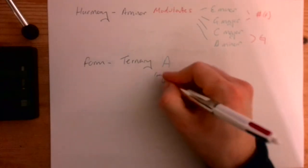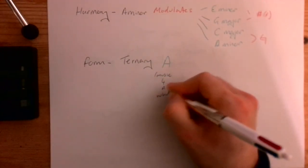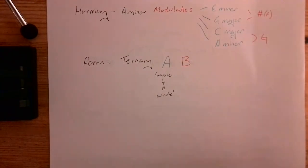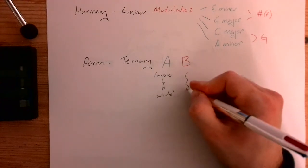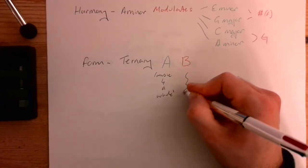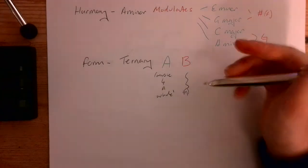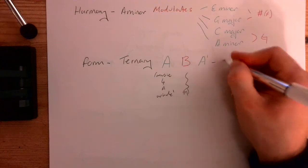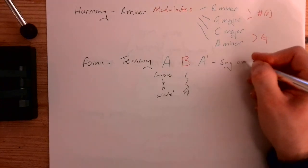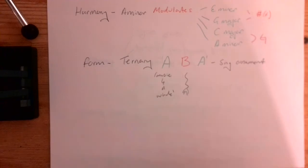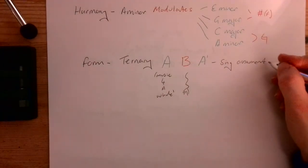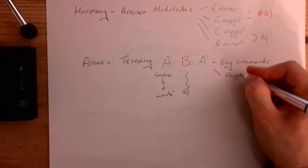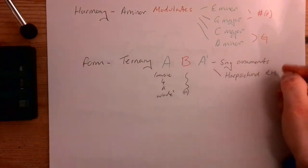And then we have our B section, which is when the snakes, so I'm just going to draw a little picture of a snake, sort of. There we go. Excellent. And then we have our A section come back, although most of the times it's referred to as A1, because the singer would ornament or change the melody when they did it the second time. And the harpsichord would realise their right hand slightly differently, because it was improvised.